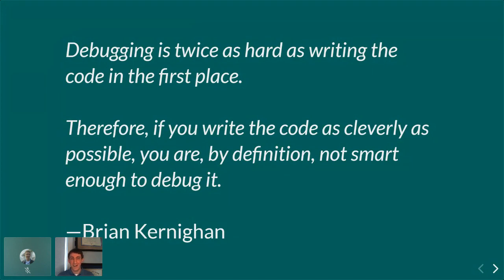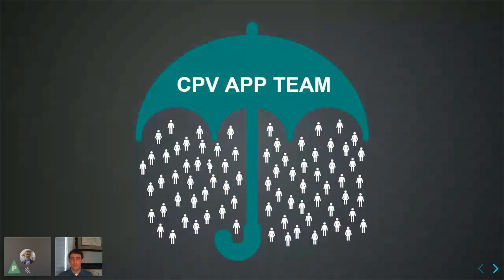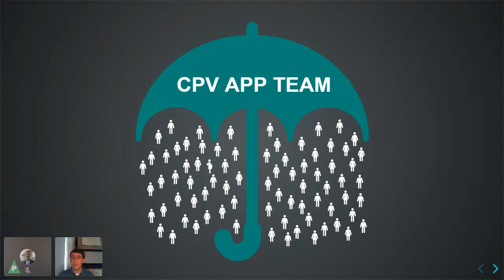In my past experience I'd been doing app development solo, but when working on the CPV production app we had an entire team. I couldn't even put this presentation together by myself — I had to talk to different people to pull screenshots and data. It truly is a team effort. Your team may include people who do user acceptance testing, domain experts, end users — they're all part of the quality checks.